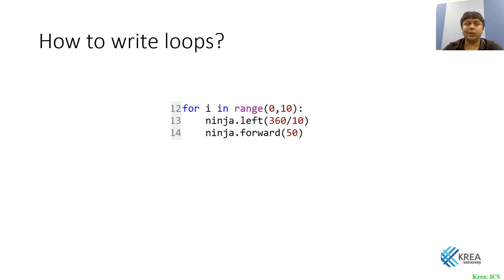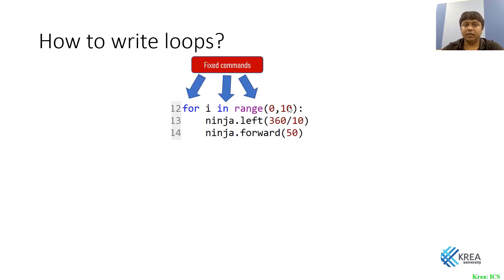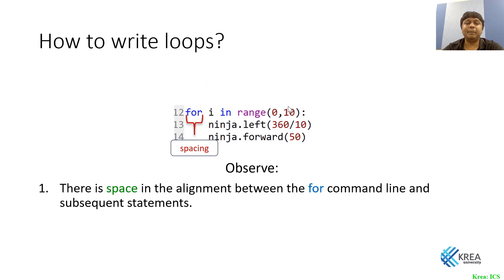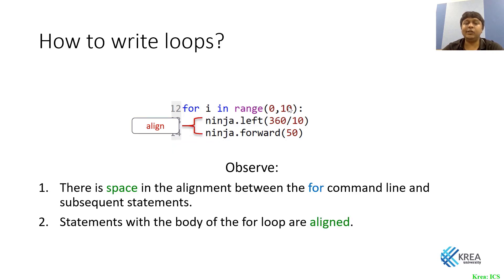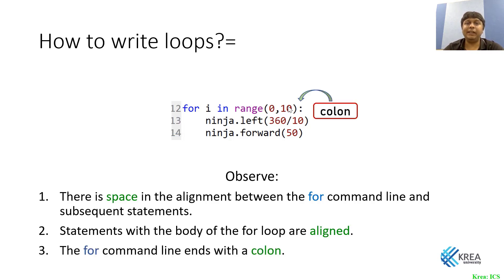Revisiting how to write loops: the range can be changed — for example, range(0, 10) draws a ten-sided polygon instead of five. The variable i need not be named i; it can be j, k, or anything. Key syntax rules: there must be consistent indentation between the 'for' line and the body statements, all body statements must be aligned at the same indentation level, and there must be a colon at the end of the for line.